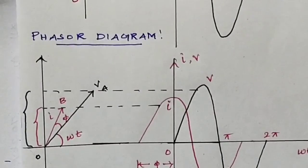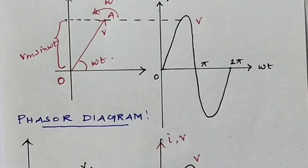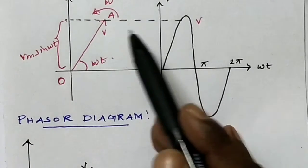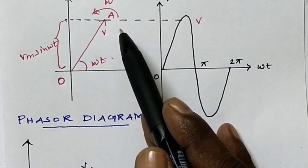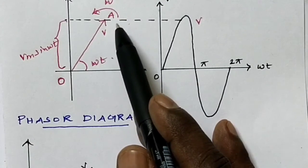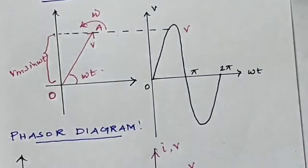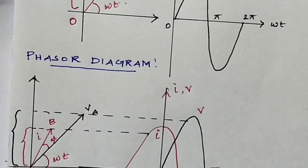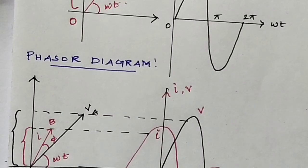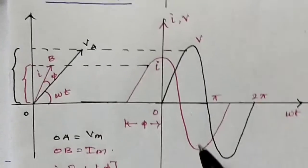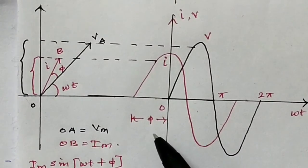The phasor means a sinusoidal alternating voltage can be represented by a vector which rotates in the anticlockwise direction about the origin at a constant angular velocity. That rotating vector is called the phasor. The phasor diagram means the diagram which shows the various phasors and their phase relations — here the current and voltage, where current leads by angle phi.